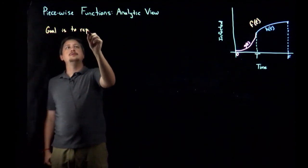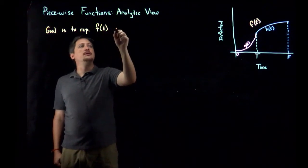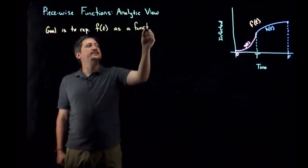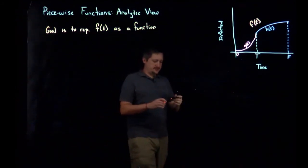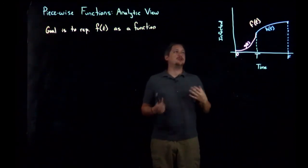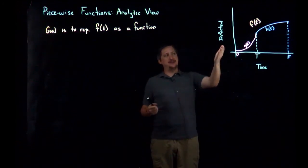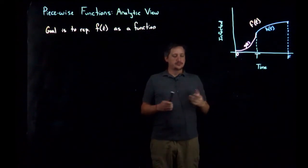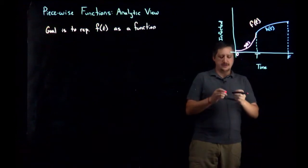Our goal here is to represent F of T — the overall thing — as a function using the same sort of general ideas. So F of T equals... we want to write it down with actual algebra instead of just describing it as an exponential piece and then a radical piece.